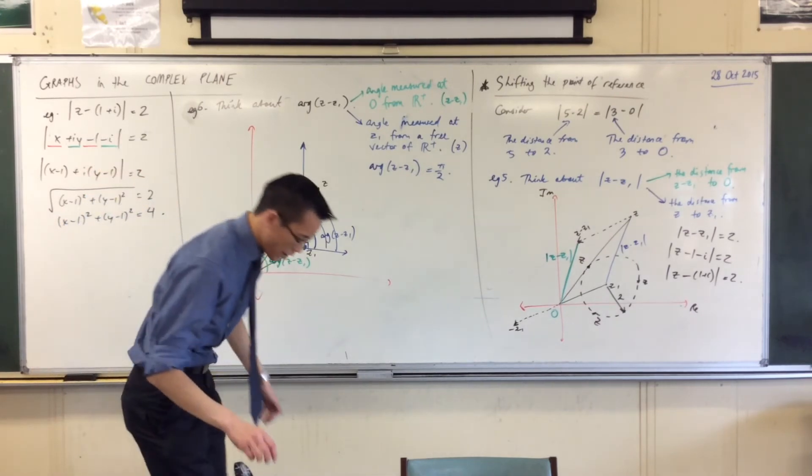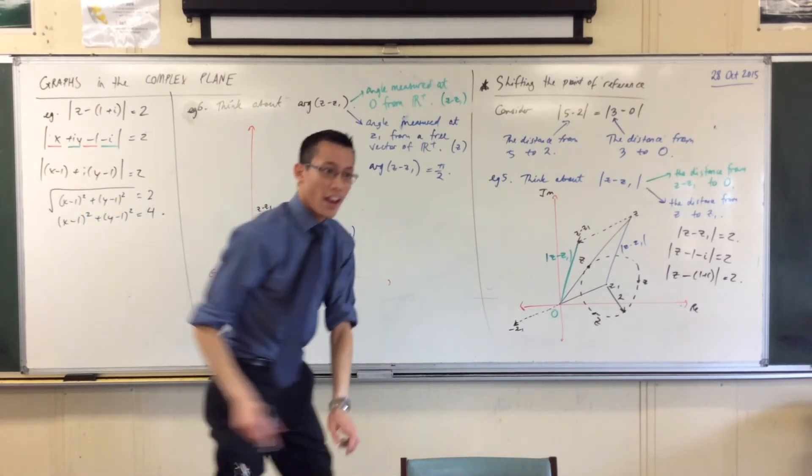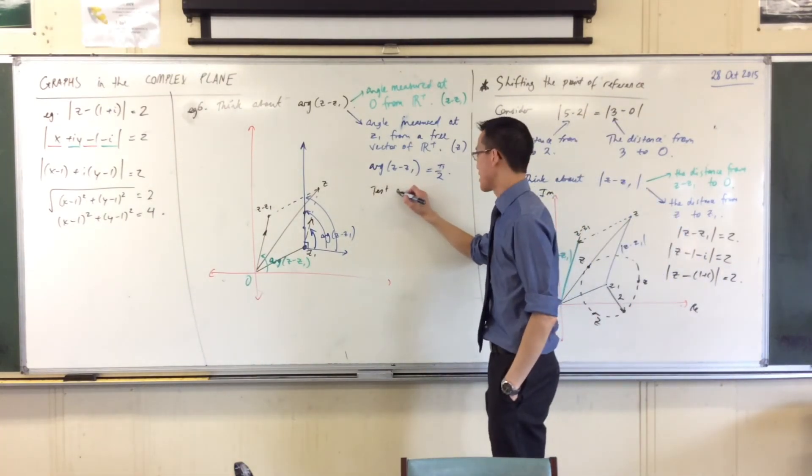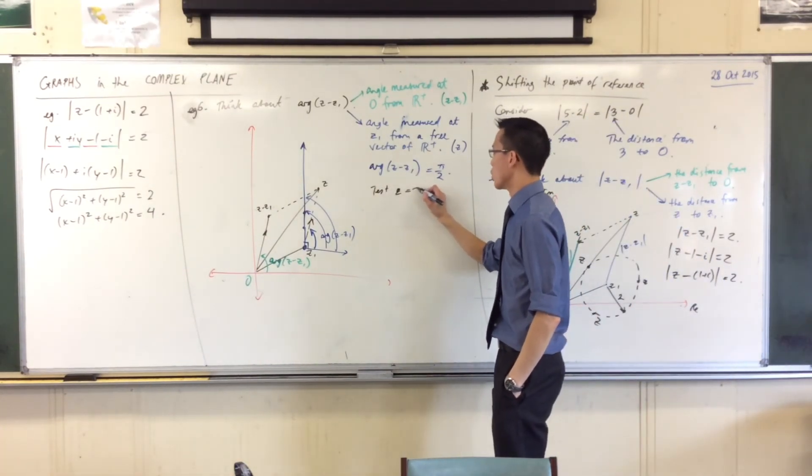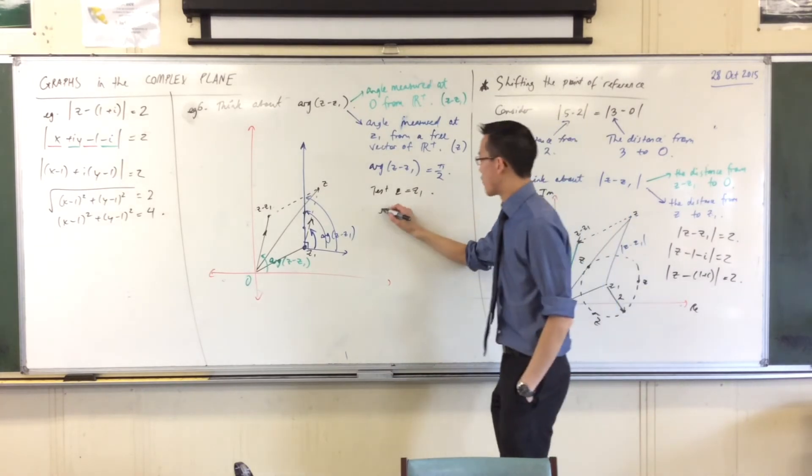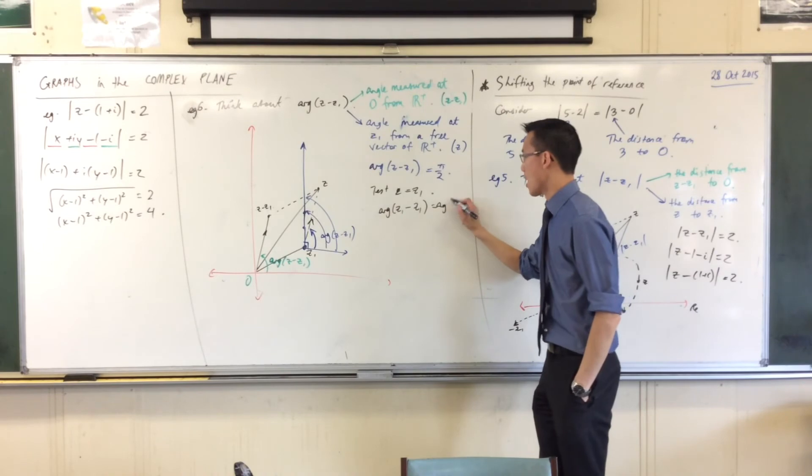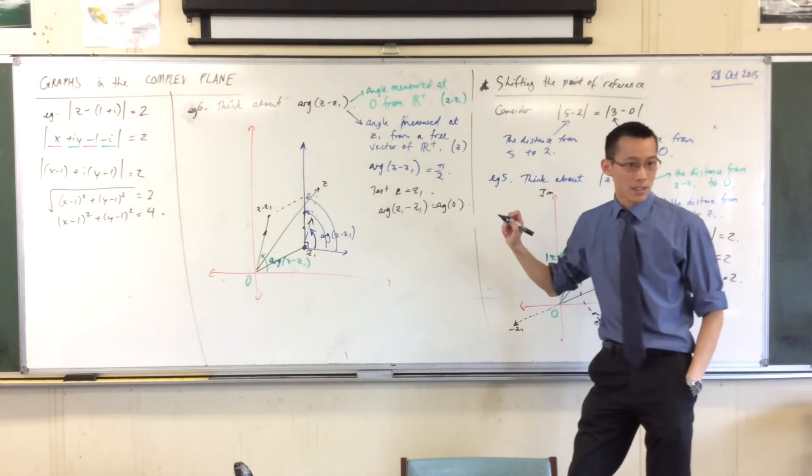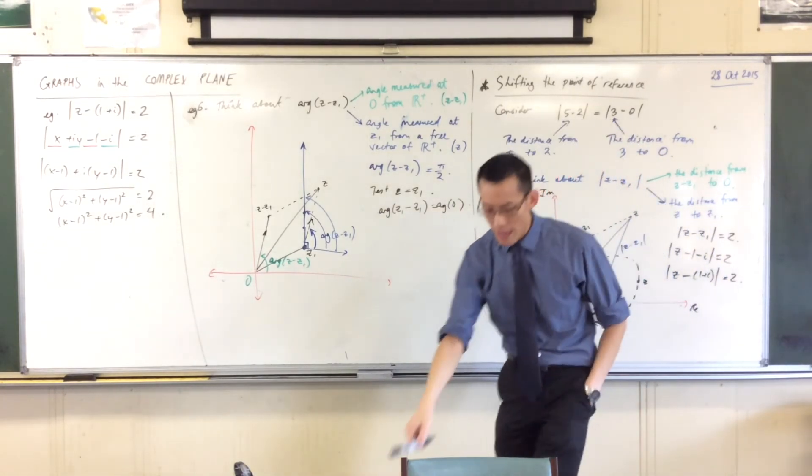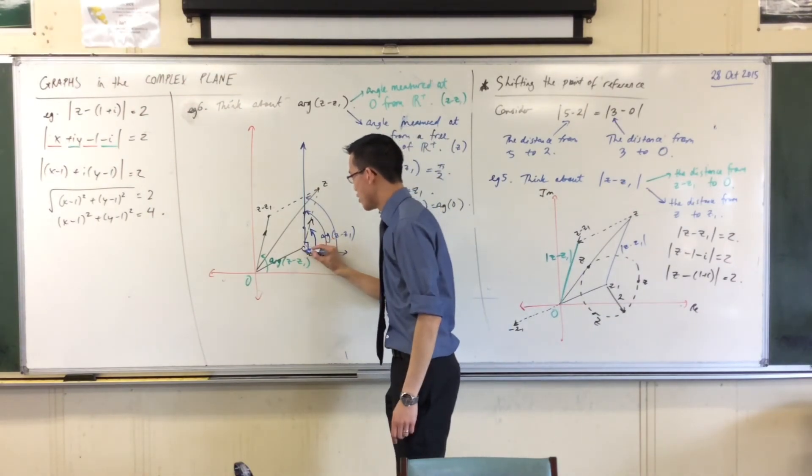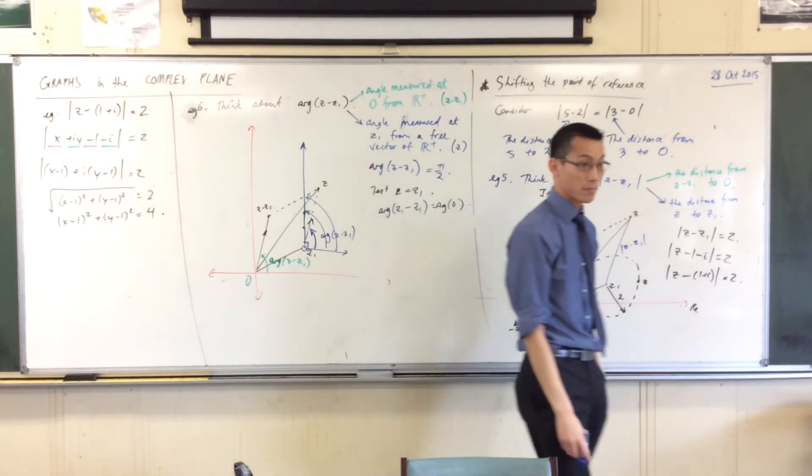We don't have to guess. Because if I test out z1, when I test out z equals z1, what I find is it's the argument of z1 take away z1, which is the argument at the origin, which is undefined. So therefore, z1 itself is not included in the locus.